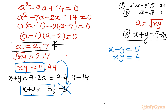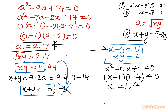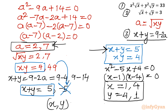We can see these are sum and product of roots, so we frame the quadratic: x² − 5x + 4 = 0. Factorizing: (x − 1)(x − 4) = 0, so x = 1 or x = 4. Since x + y = 5, if x = 1 then y = 4, and if x = 4 then y = 1. The solutions from Method 1 are (x, y) = (1, 4) and (4, 1).